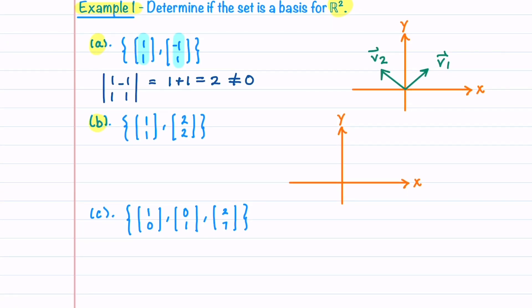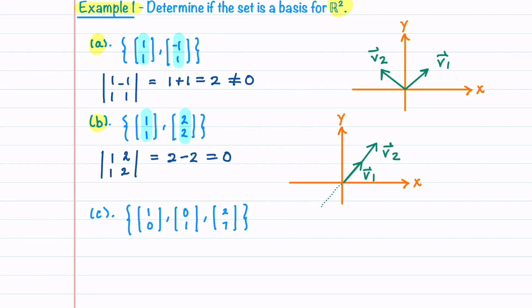Our second set contains the vectors (1, 1) and (2, 2). We take the determinant of these vectors, and it equals 2 − 2 = 0. This means the vectors in the set are not a basis for R2. If we graph the two vectors, we can see that their span is a line, and that all vectors in R2 cannot be written in terms of these two vectors — only vectors that lie along this line can be written in terms of those two vectors.